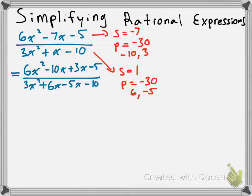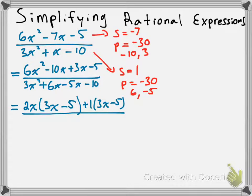Now, we have to common factor the first two terms and then the second two terms at the top and the bottom — we're using the method of factoring by decomposition here. Common factoring from the top, we get 2x times 3x minus 5 from the first two terms, and from the second two terms we common factor out plus 1, which gives us 3x minus 5. So, we now have that common binomial factor.